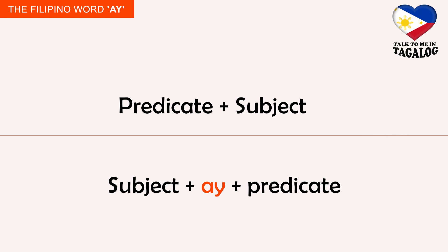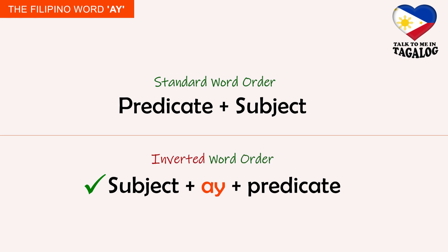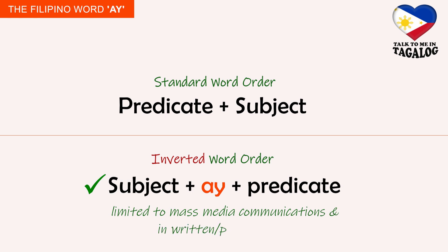Before we move on to our example sentences, please note that there are only two basic word orders in forming Tagalog sentences. First is the predicate plus the subject, which is commonly used in spoken Filipino — the predicate comes first and then the subject. The other one is the inverted word order using the connector 'ay': subject plus 'ay' plus predicate. This word order, however, is limited to mass media communications and written or printed form.